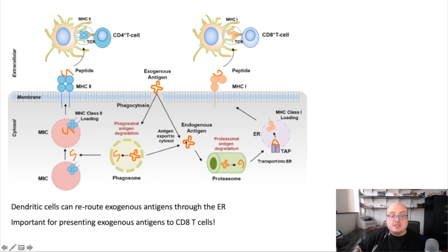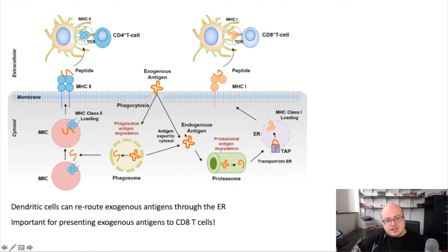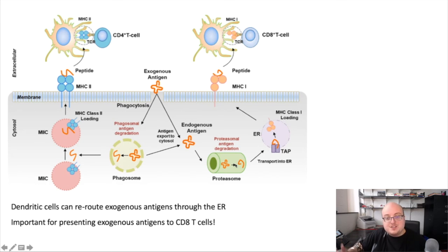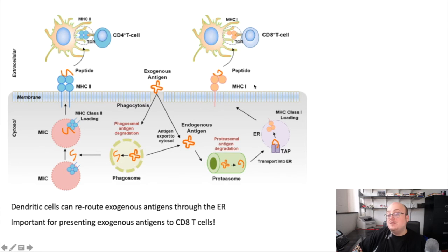However, specifically in dendritic cells — through mechanisms we won't fully get into, some of which remain mysterious — these exogenous antigens end up getting either dumped into the cytoplasm or routed into the ER, and ultimately get degraded by the proteasome system the way they would if they were an endogenous antigen. This allows them to be shuttled into the ER via TAP and loaded onto MHC class I instead. So here we have exogenous antigens being presented by MHC class I, which allows us to present exogenous antigens to CD8 T cells.